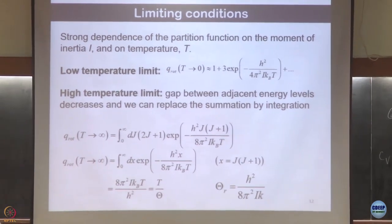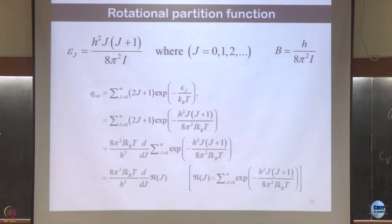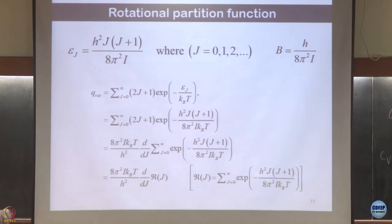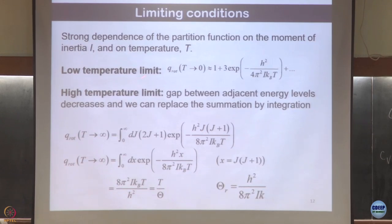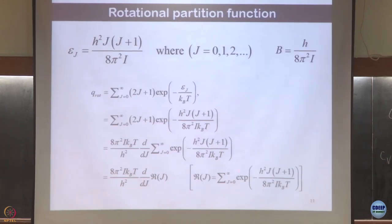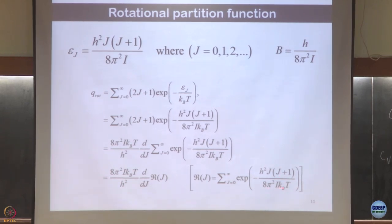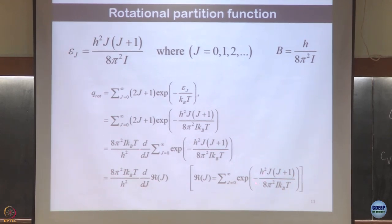There is a very strong dependence on moment of inertia I. Though we cannot evaluate the sum analytically, we can evaluate it at high and low temperature. At high temperature, the exponent becomes small. At low temperature, the exponent becomes very large and goes to zero, so only the first few terms matter.